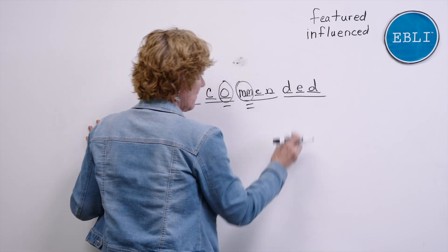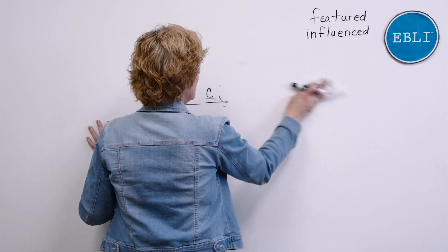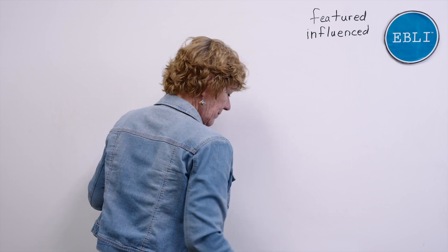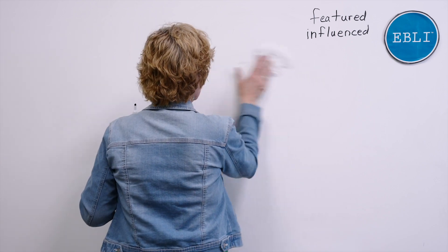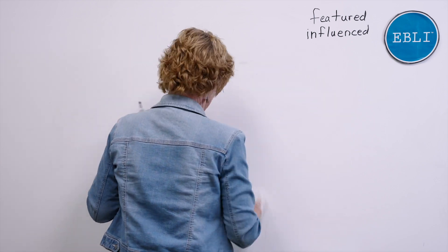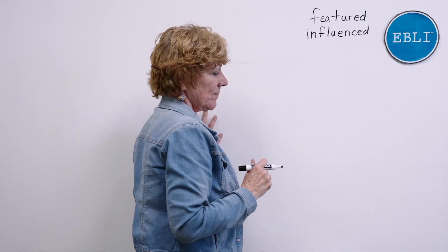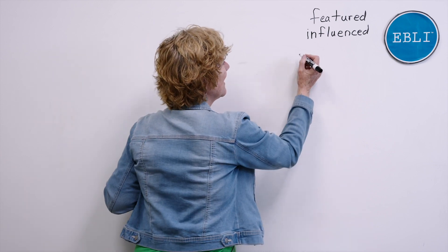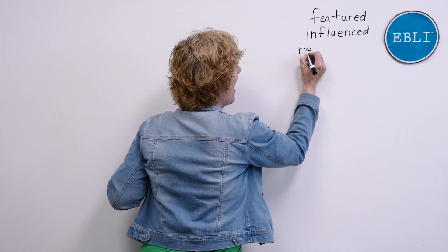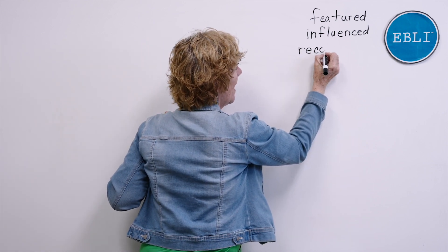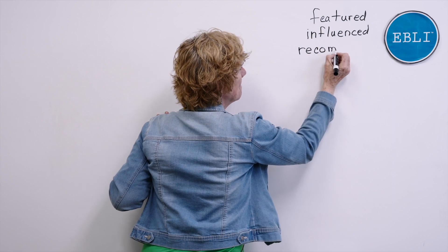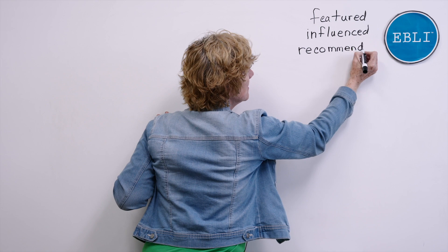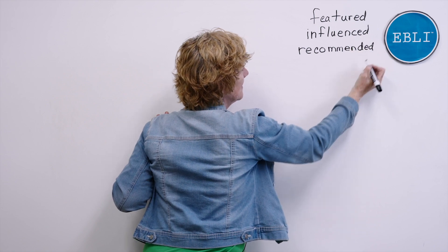Now say the sounds as you write recommended. All smooshed together. Say every single sound and then we'll check it. All right. Ready to check? Let's say those sounds as we write. Re. A. C. A. Reca. M. Did you have that two letter M. A. N. D. I. D.